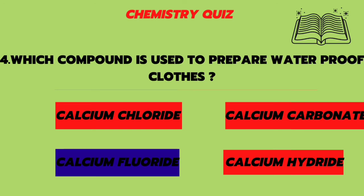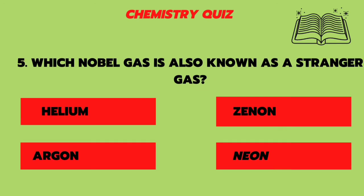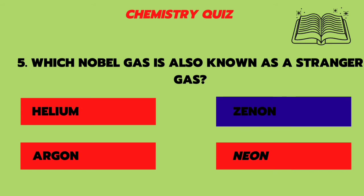Fourth question: which compound is used to prepare water? Calcium fluoride is used. Fifth question: which noble gas is also known as the stranger gas — helium, xenon, or argon? The answer is xenon.